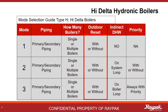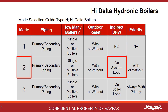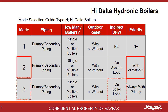The difference lies in the presence or absence of an indirect hot water system. If there is no indirect, then it is Mode 1 — this is the most common configuration. If there is an indirect system present on the system loop, then it is Mode 2. If the indirect is present on the boiler loop, then it is Mode 3. Mode 2 can be run with or without priority, while Mode 3 is always with priority.